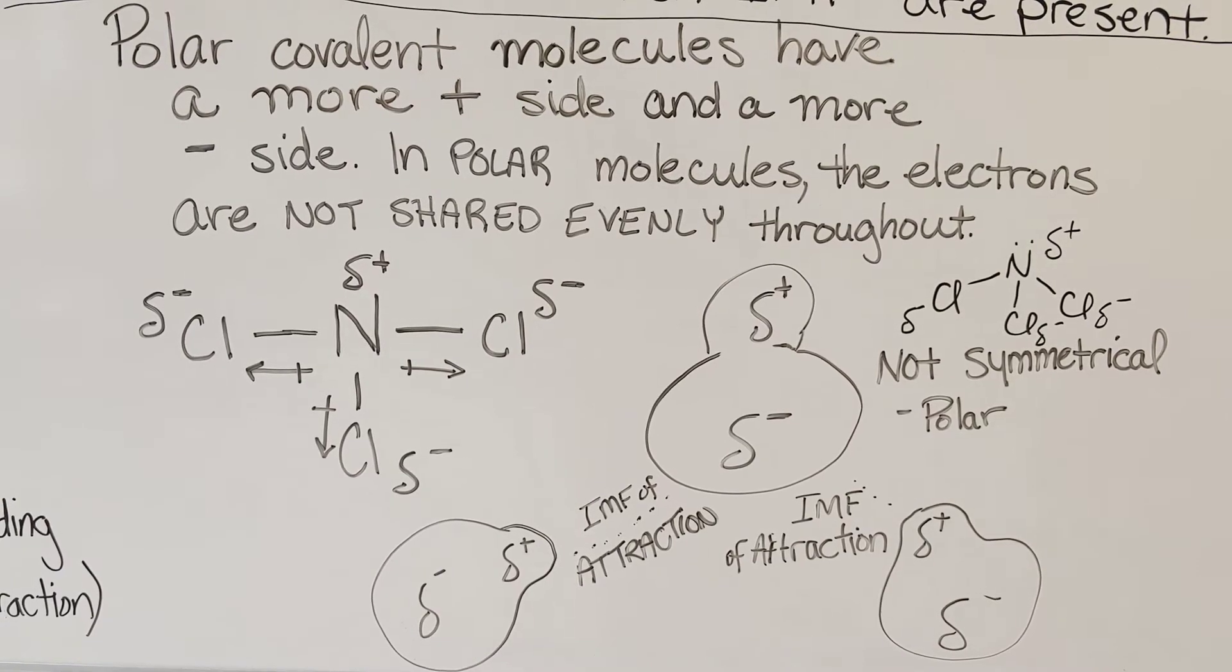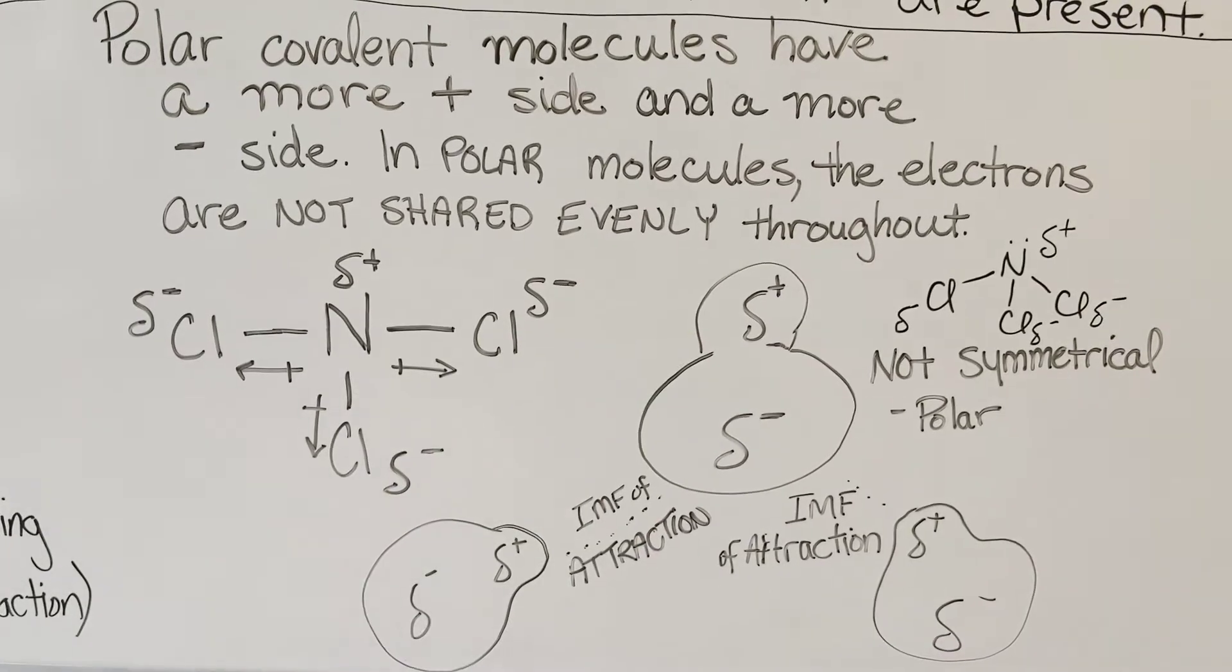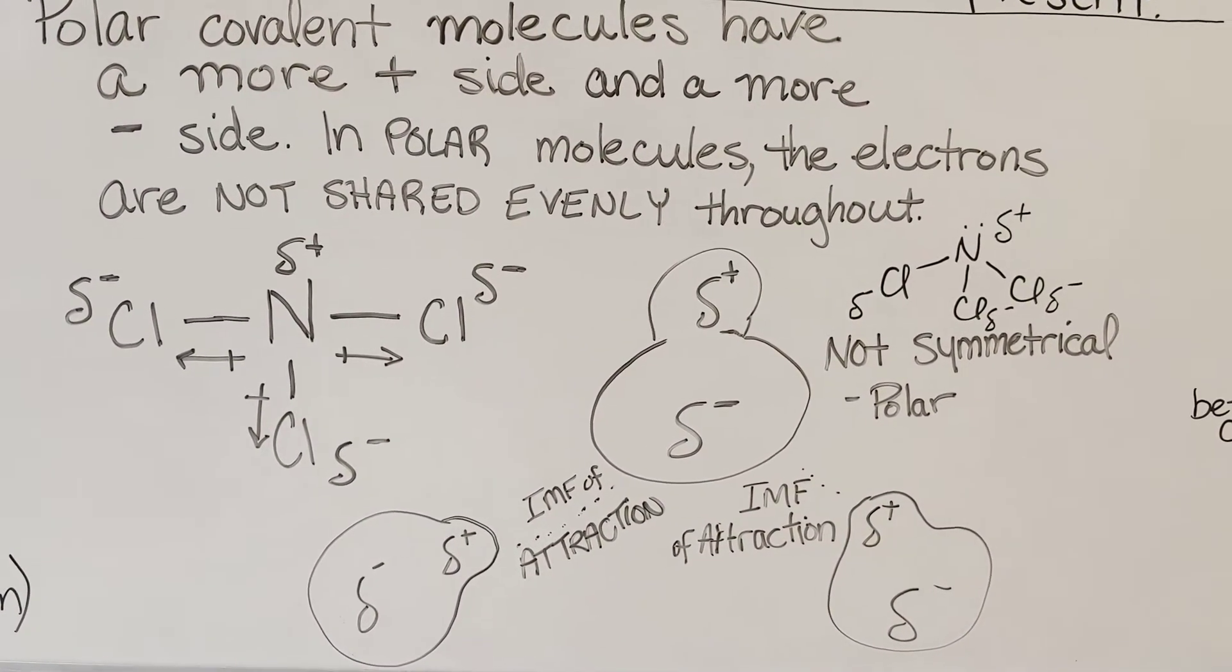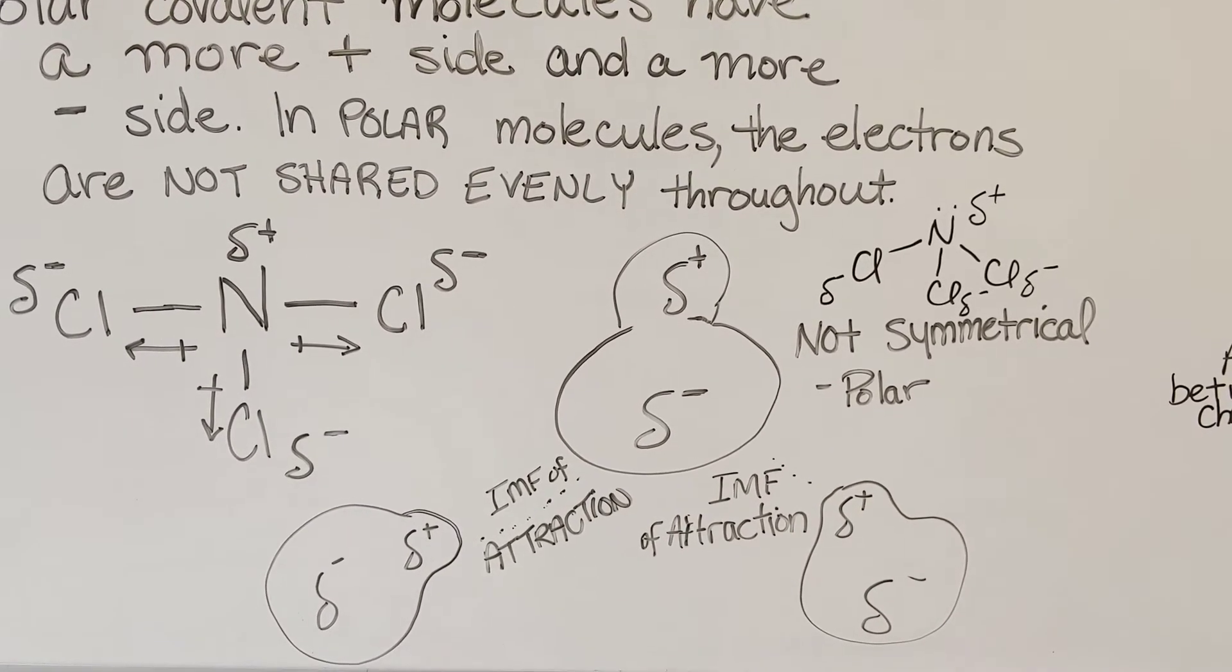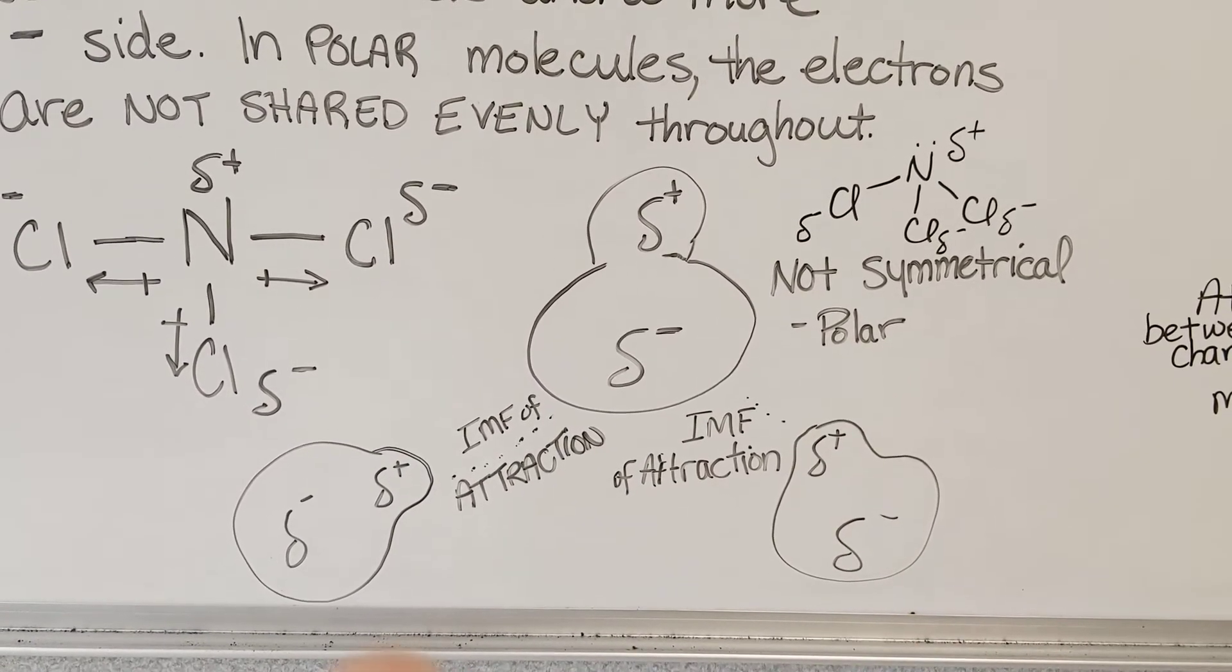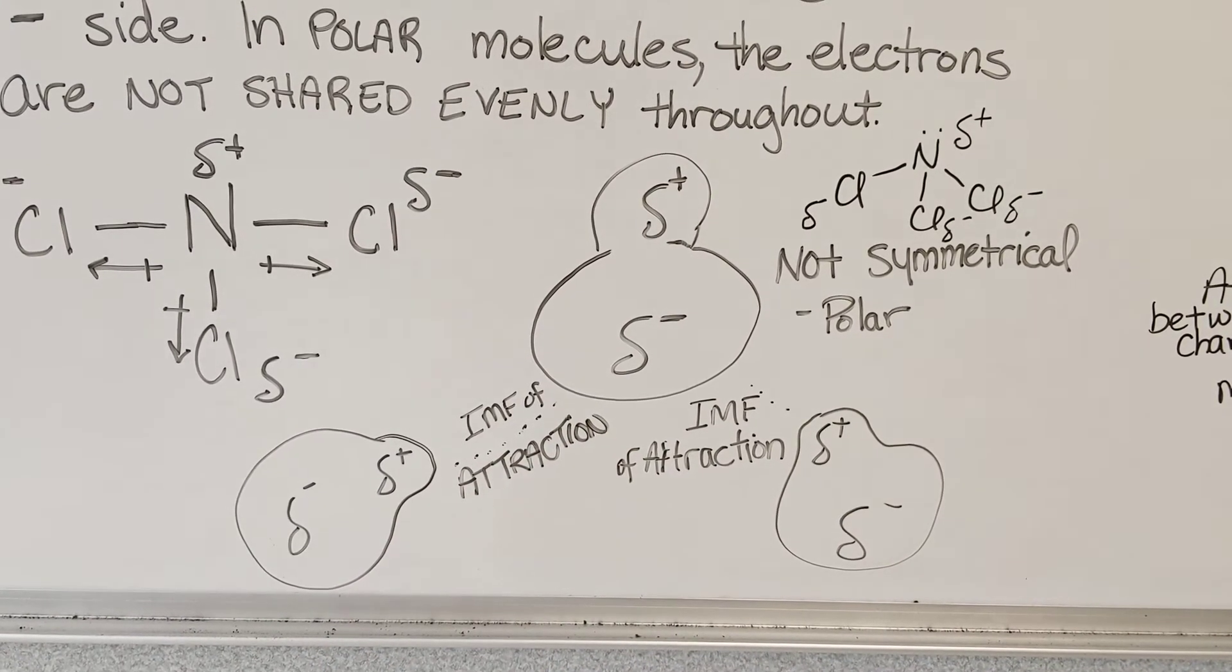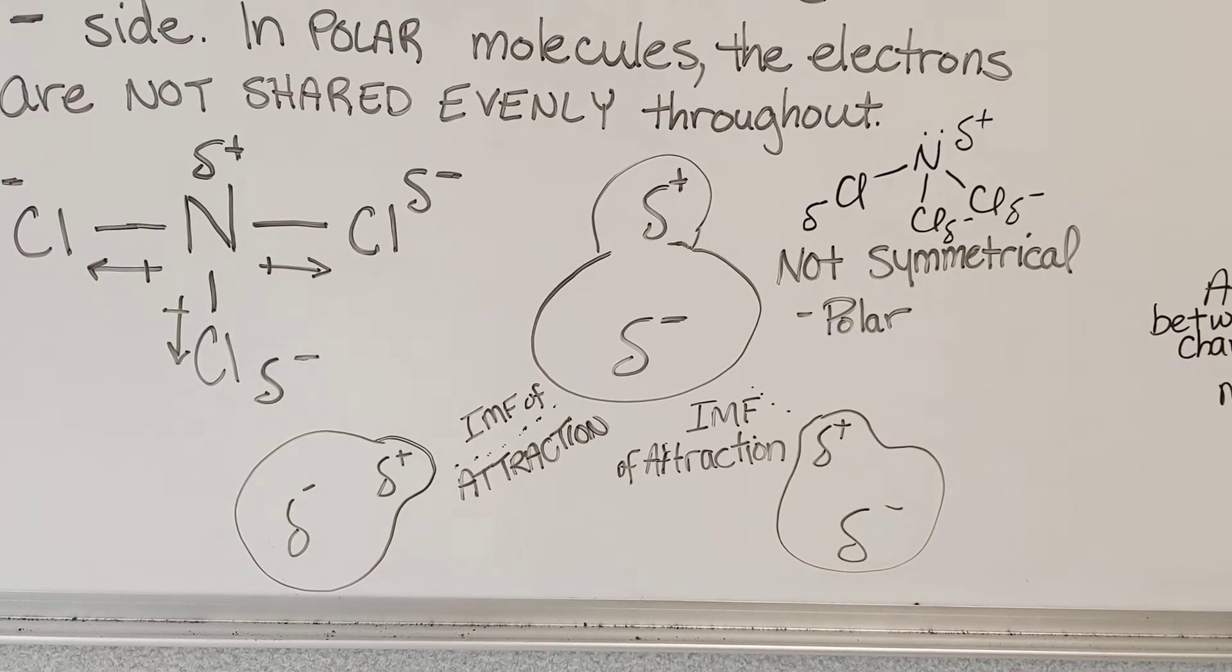The other way to represent that is to draw the delta symbol, delta plus, and delta minus. I've drawn blobs to represent the NCl3 molecule, showing how it's not symmetrical, that it's polar. And by drawing three blobs of the same NCl3 molecule, I'm showing intermolecular forces of attraction between the partially positive sides of the molecule and the partially negative sides of the molecules.